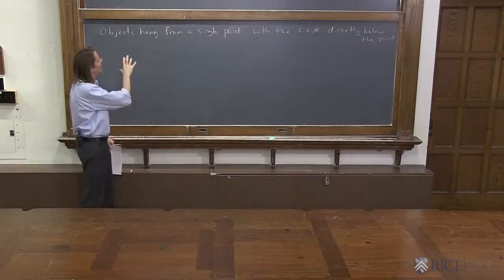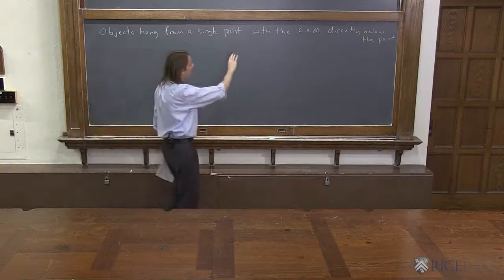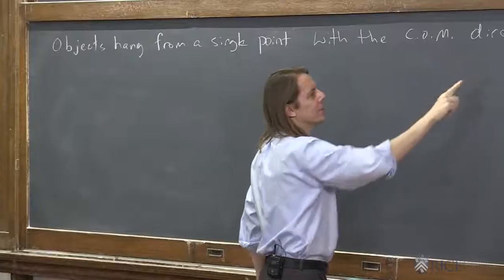Here we're going to talk about how if you take any object and you hang it from a single point, it ends up hanging so that its center of mass is directly below the point.